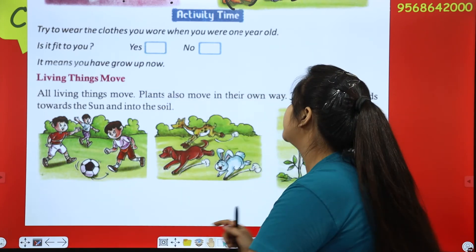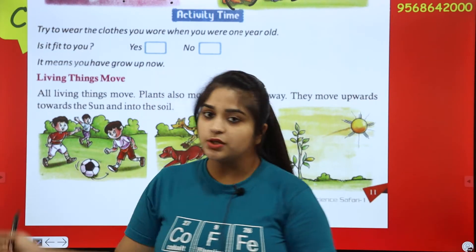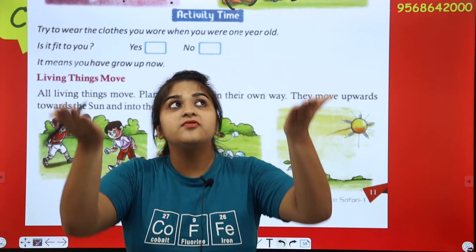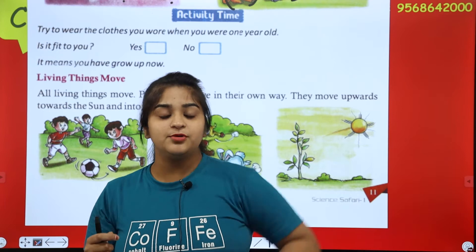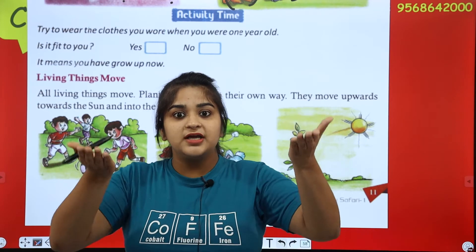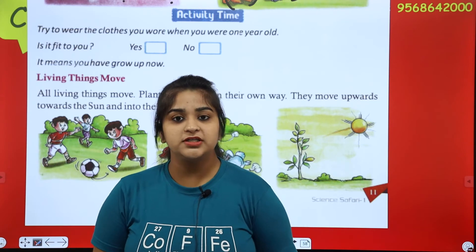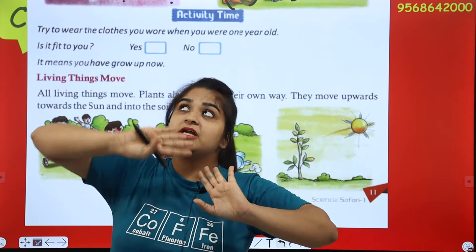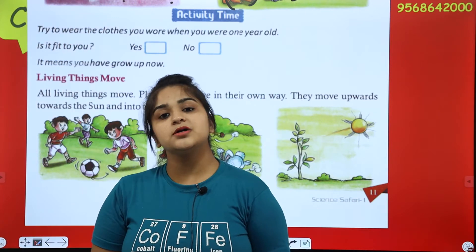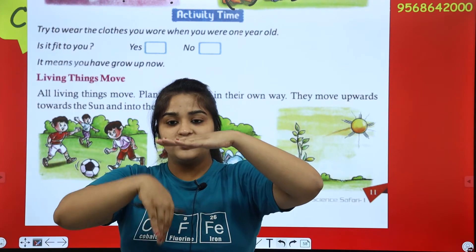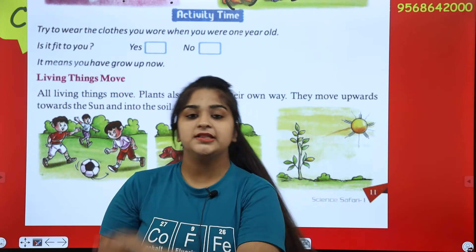Plants move upwards towards the sun and into the soil. If you give them water and they get sunlight, they grow up and move up. If they don't get water or anything, they move downwards.